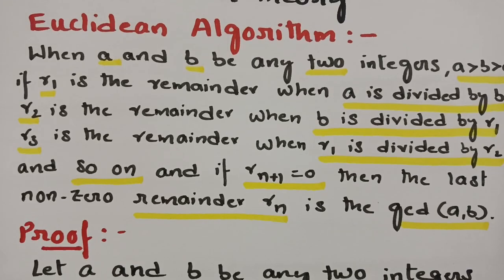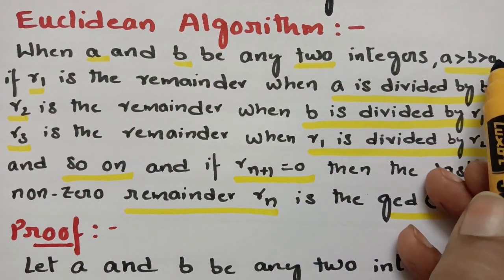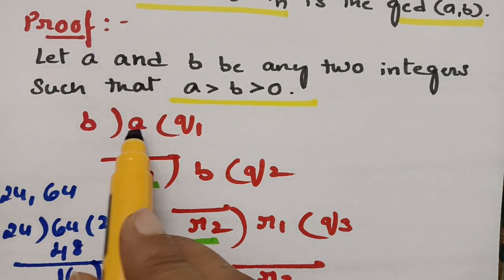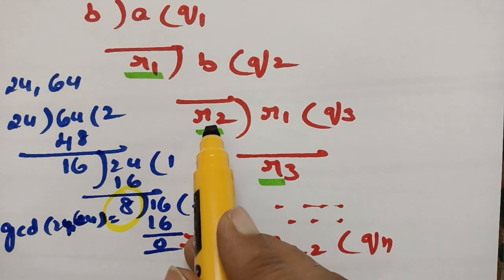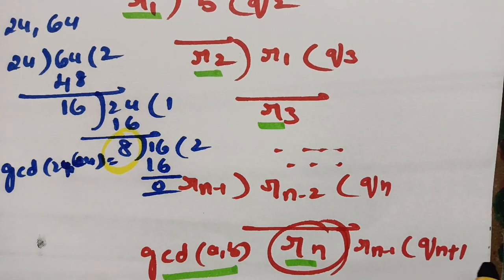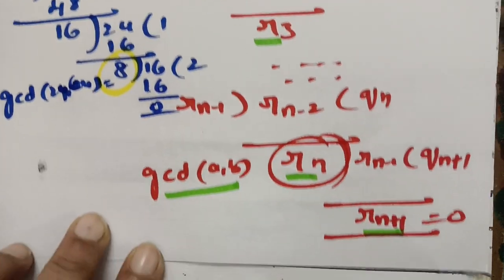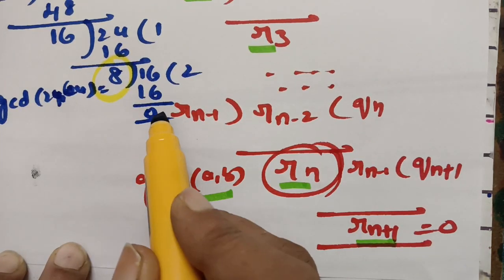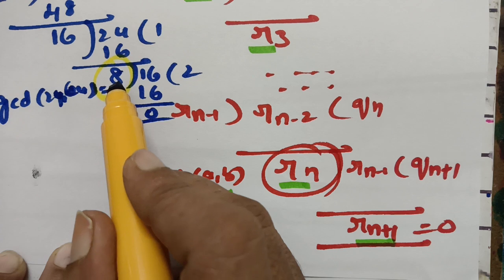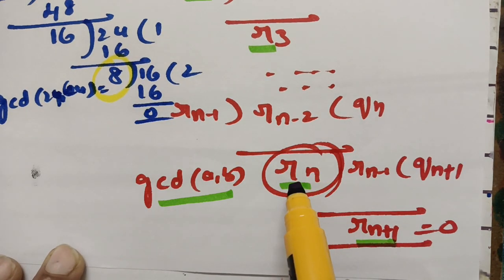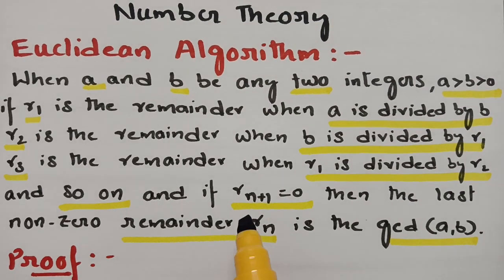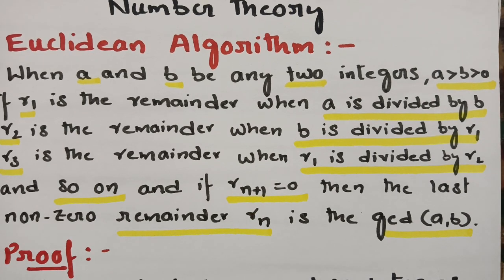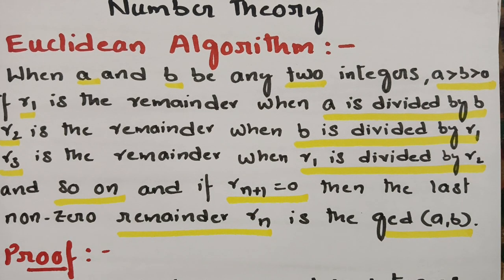So this is what the statement says. When A and B are the two positive integers, R1 is the remainder when A is divided by B, R2 is the remainder when B is divided by R1, R3 is the remainder when R1 is divided by R2, and so on. If Rn+1 equals 0, the last non-zero remainder Rn is the GCD of A and B. Now let's get started with the proof of this theorem.